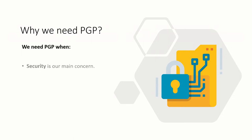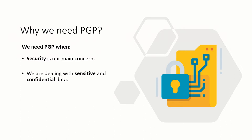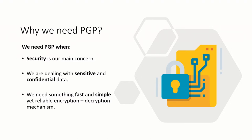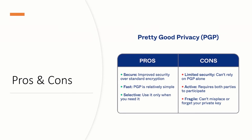Why exactly do we need PGP? We need PGP when security is our main concern — when we are dealing with sensitive and confidential data and we need something fast, simple, yet reliable for encryption and decryption. When your bot is transferring or processing files and you want to ensure security is not compromised, you can encrypt the information by creating public and private keys, which we'll look at in our example.